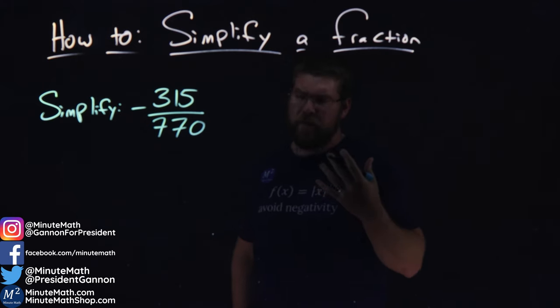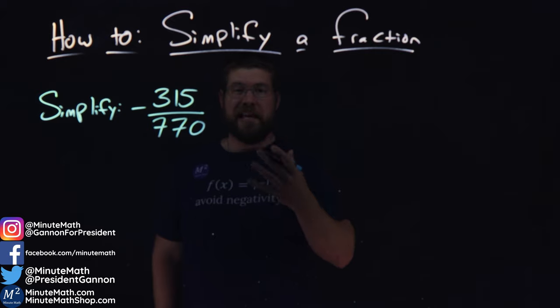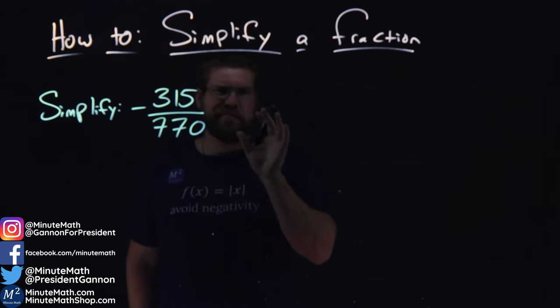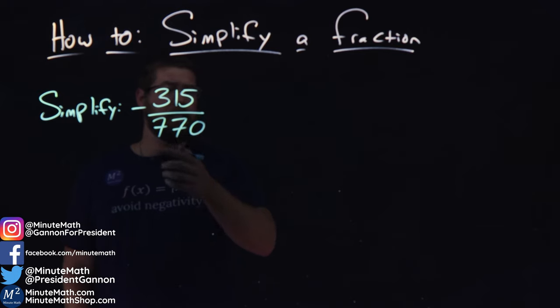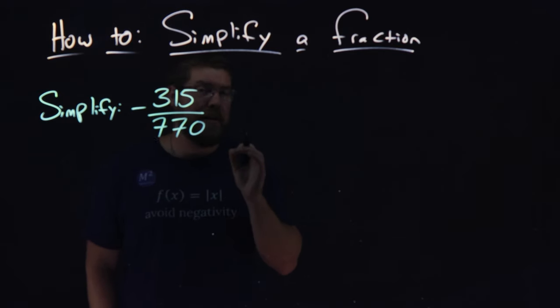To simplify a fraction, we're going to start with this example. We're going to actually use an example to show the process here. We're asked to simplify negative 315 over 770.